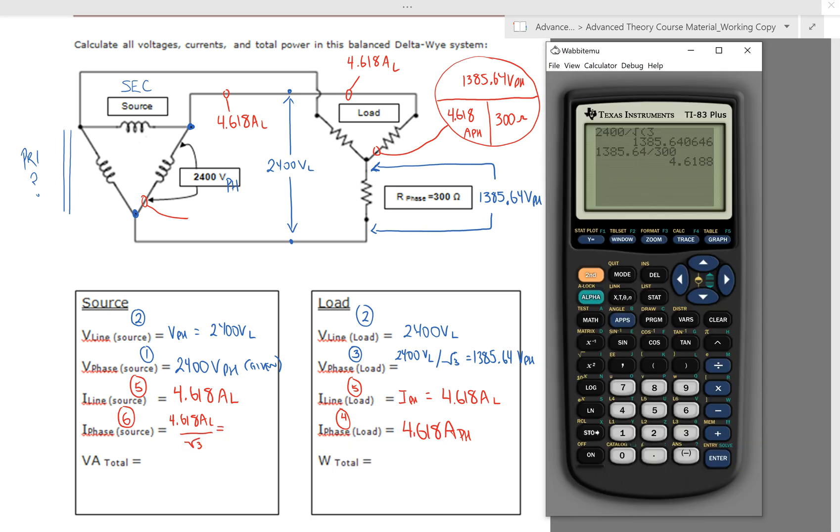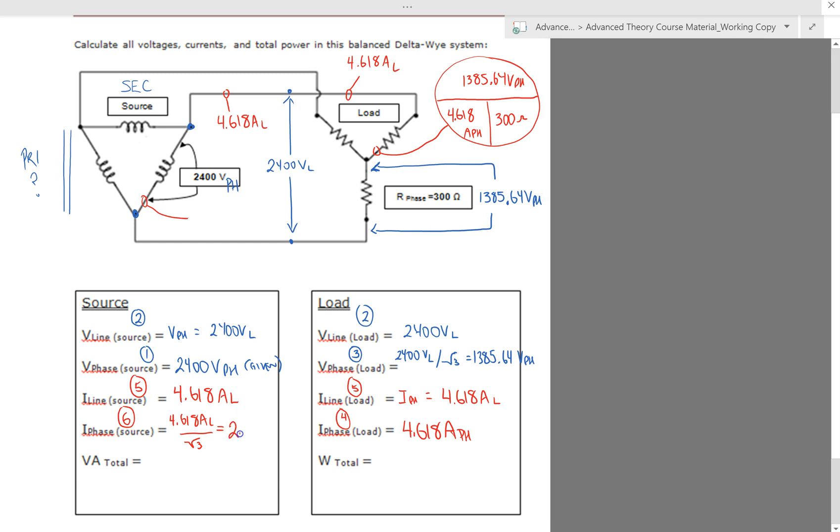So let's see, we've got, let's clear all that out, 4.618. We're going to divide by the square root of three, and that gives us 2.666. So that takes care of all of our currents that dropped that guy in here, 2.666.